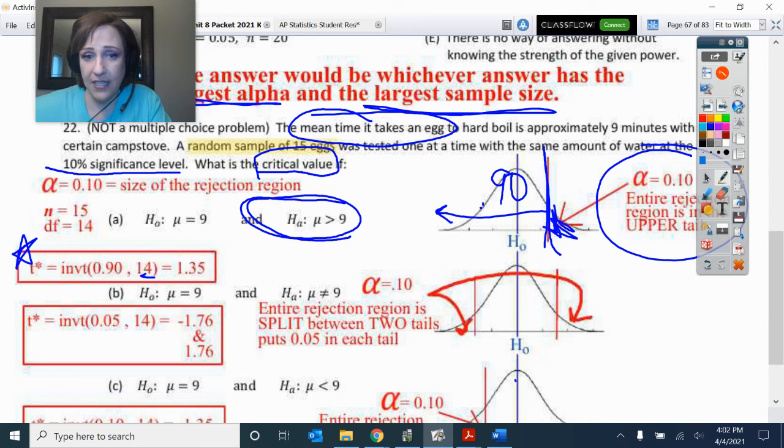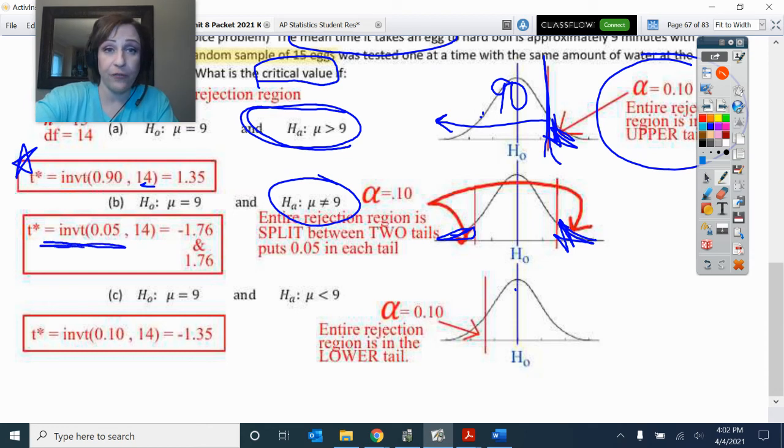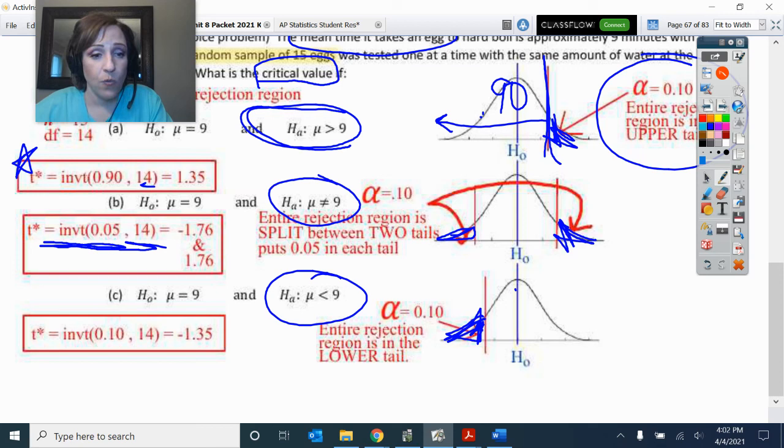Okay. Now, this second one has got two tails, which means that the 10% is split between both tails. So I have 5% down here on the bottom and 5% up here on the top. So I did inverse T of 0.05 with 14 degrees of freedom. So we have the average where the entire 10% is down here. So we've got inverse T of 0.10 with 14 degrees of freedom. So it's negative 1.35, which is the same as the first problem, just the negative side to it because of symmetry.